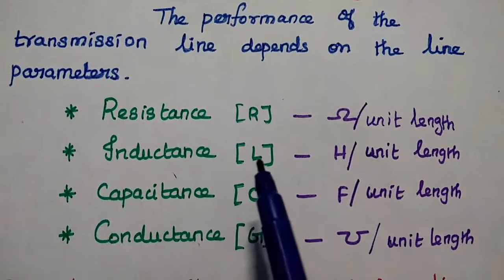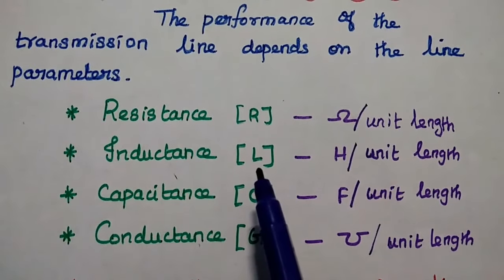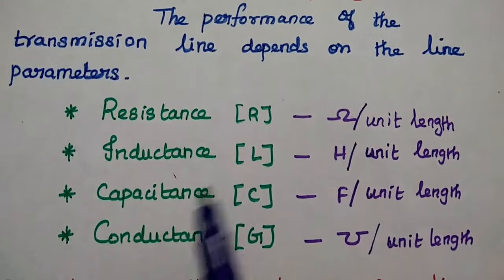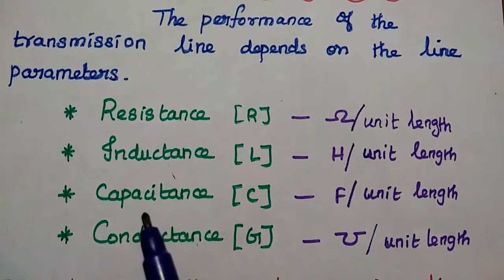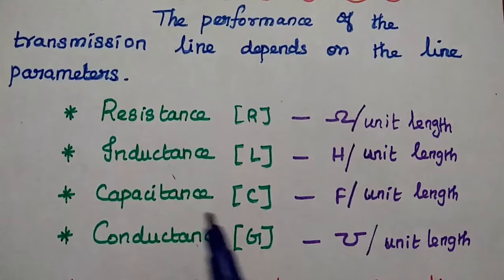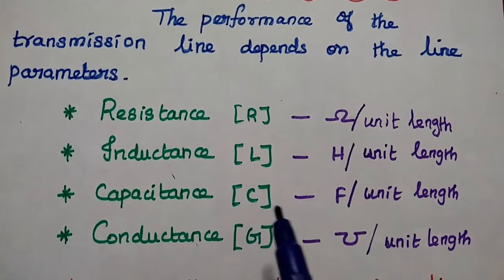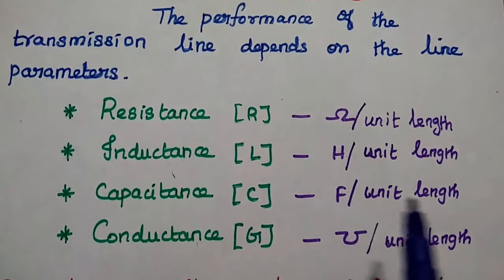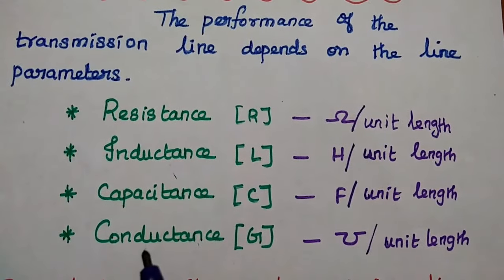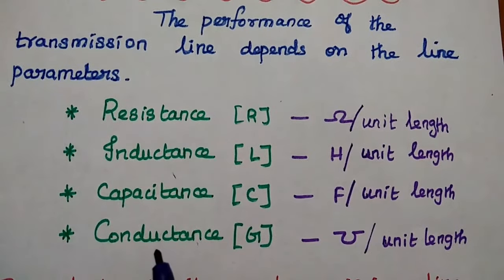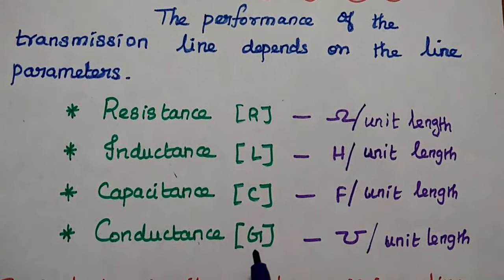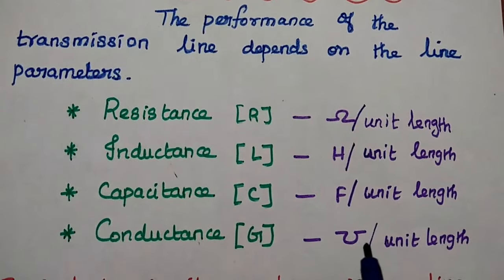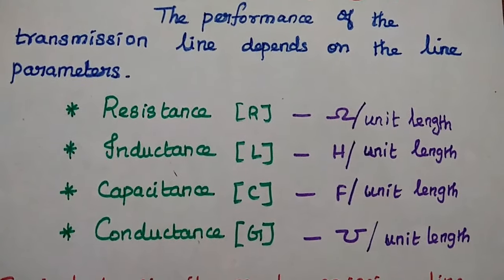The next one is inductance, denoted as L. Its unit is Henry per unit length. The next one is capacitance, denoted as C. Its unit is Farad per unit length. And the last one is conductance, denoted as G. Its unit is Mho per unit length.